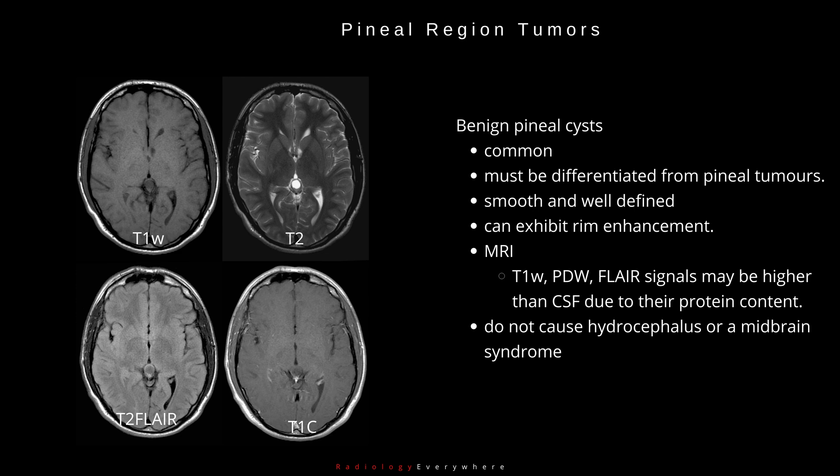Benign pineal cysts are common and must be differentiated from pineal tumours. They are smooth and well-defined and can exhibit rim enhancement. Their signal on T1, proton density-weighted, and FLAIR images may be higher than CSF due to their protein content. However, they do not cause hydrocephalus or midbrain syndrome.